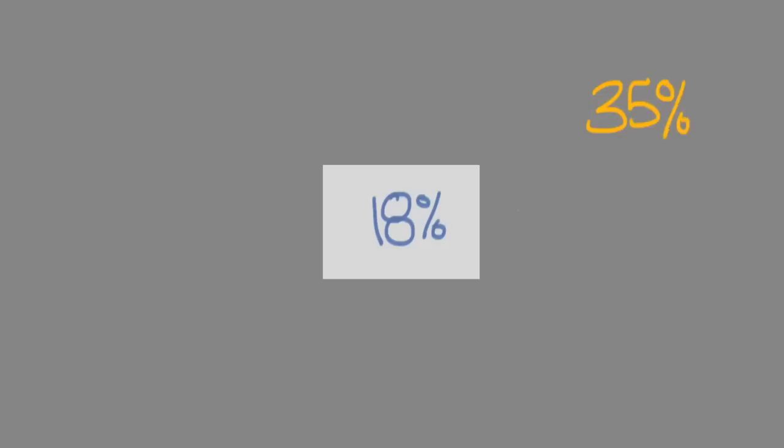So here you can see the problem that metering and exposure create for photographers. You've got your camera wanting to make 18% gray. Your photo isn't actually full of anything that's 18% gray. It's actually, if you look at it, about 35% gray. So you want to try to find a way of tricking your camera into exposing correctly for the 35% that it actually is, not the 18% that it wants to make.